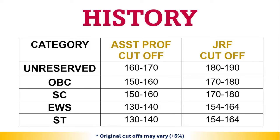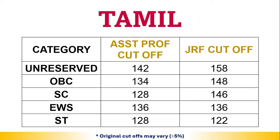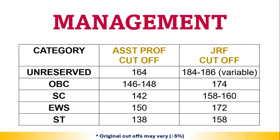For History, the Assistant Professorship cutoff range is 162 to 170, and JRF will be 182 to 192. For the OBC or next category, the AP cutoff is 164 and above, and JRF will be in the range of 184 to 186.